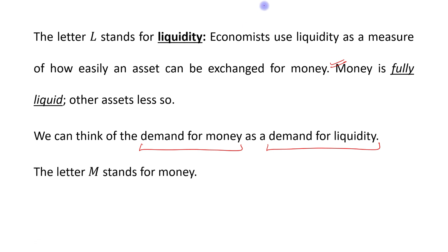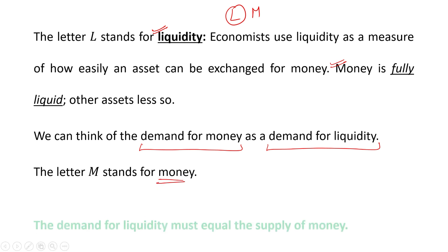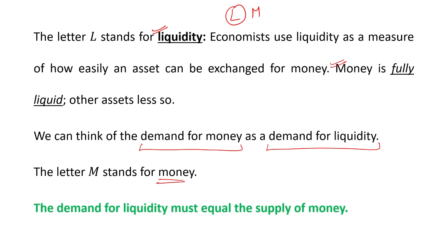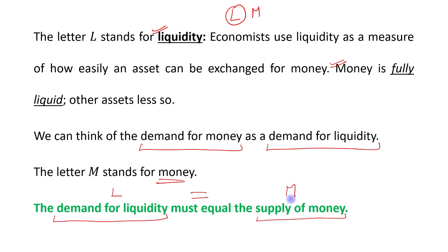Now let's talk about M, because we discussed the LM relation — L stands for liquidity. M stands for money. The demand for liquidity must equal the supply of money. The demand for liquidity, which is denoted by L, must equal the supply of money, denoted by M. So L equals M.